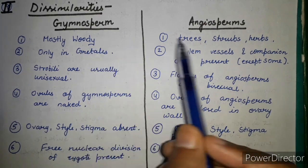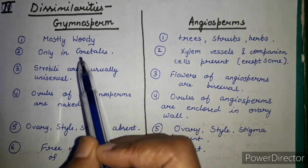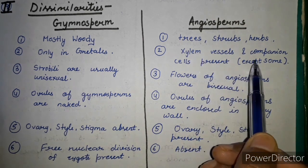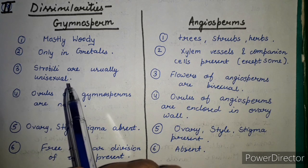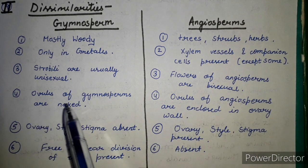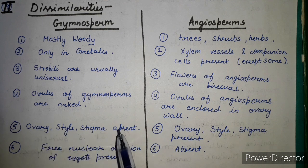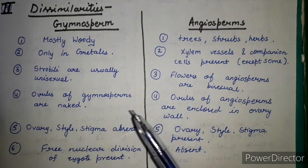To summarize: gymnosperms are more woody plants, while angiosperms are found as trees, shrubs, herbs, etc. Vessels are present only in Gnetales in gymnosperms. Strobilus is unisexual with few exceptions, while flowers in angiosperms are bisexual. Ovules are naked in gymnosperms and enclosed in angiosperms. Ovary, style and stigma are absent in gymnosperms but present in angiosperms. Free nuclear division is present in gymnosperms but absent in angiosperms.